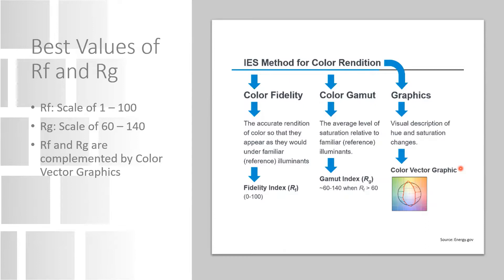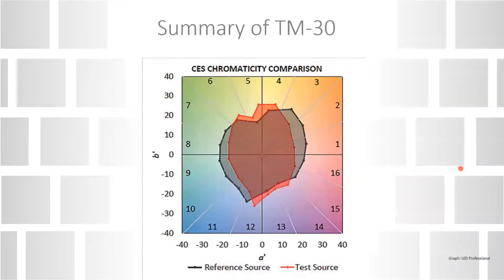To summarize best values: Rf, the Fidelity Index, is on a scale of 0 to 100 — direct comparison to CRI. Rg is on a scale of 60 to 140, with 100 as the sweet spot equal to the reference light source. Rf and Rg are complemented by the Color Vector Graphic, which is the easiest way to see which colors are actually saturated or desaturated. The TM-30 technical memorandum also provides an online spreadsheet to help calculate and display these results — a very intuitive and informative tool for selecting light sources.